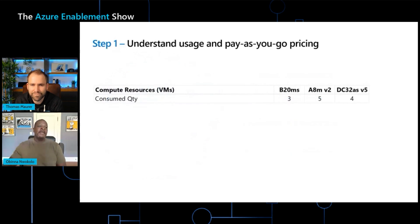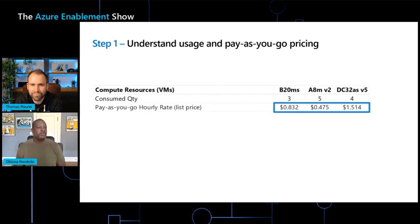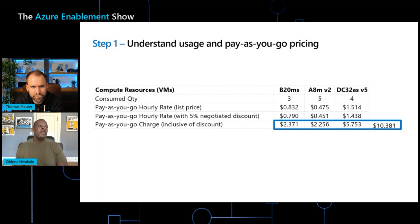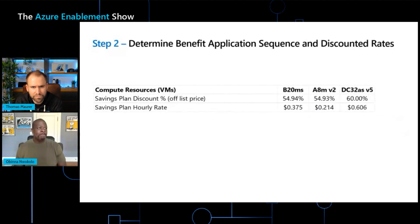Let's look at how this actually works. In this example, we're going to keep it simple — this user is using three different VMs, and these are the quantities they're using in a specific hour: three VMs, five VMs, and four VMs respectively. You can see the pay-as-you-go list prices for each. Now, in this particular case, this customer has a 5% discount applied, so let's apply that — you can see on screen the discounted prices and the total, which comes to a little bit more than $10. Now let's talk about the Savings Plan discounts at the product level. All three products have very similar discounts: 54.94%, 54.93%, and 60% for the last product. Those discounted prices are off the list price. The highest discount goes first — 60%, then 54.94%, then 54.93%.